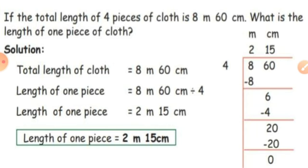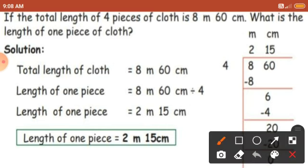Let's see the application problems. If the total length of 4 pieces of cloth is 8 meter 60 centimeter, what is the length of 1 piece of cloth? They gave you the length of 4 pieces and you have to find the length of 1 piece, so this will be division. Total length of cloth equals 8 meter 60 centimeter. Length of 1 piece equals 8 meter 60 centimeter divided by 4. Write the units: meter and centimeter. Write the dividend — in the meters place is 8. The divisor is 4.